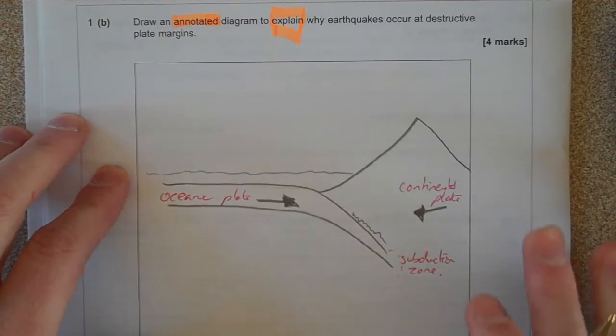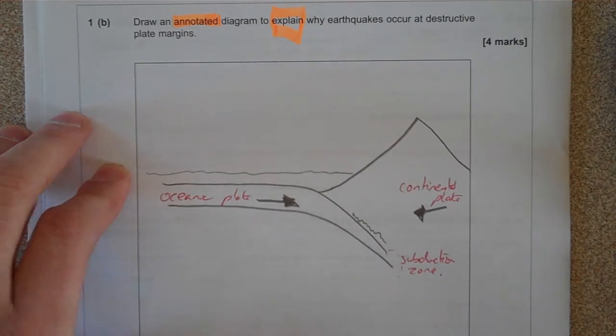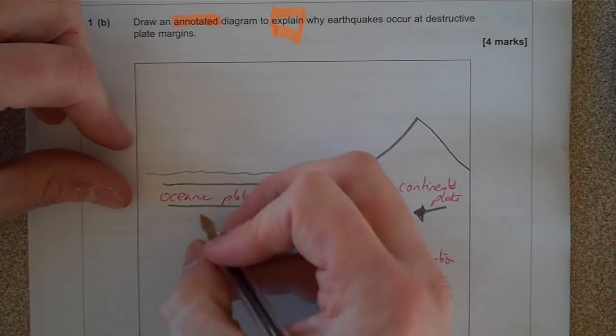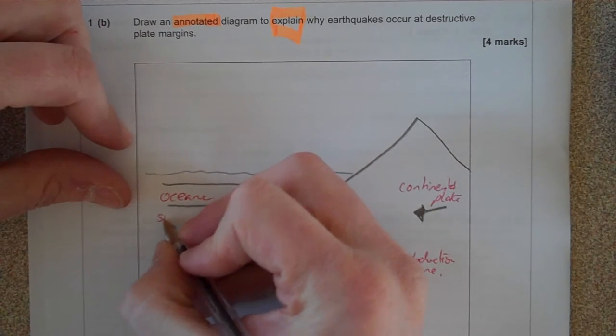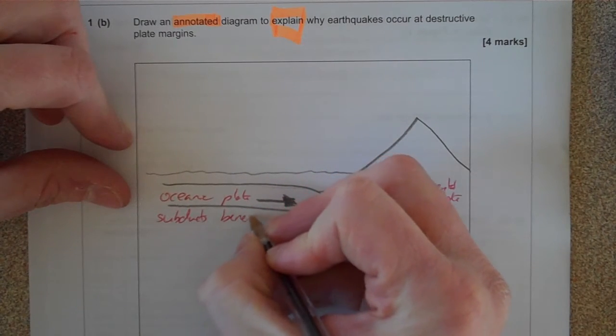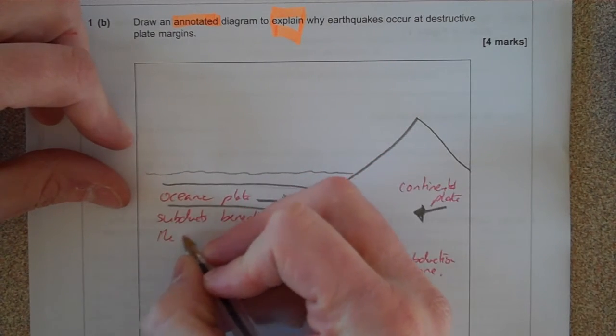So at the moment we've labelled it, now we've got to turn these labels into explanations to answer the question. So the oceanic plate subducts beneath the continental plate.